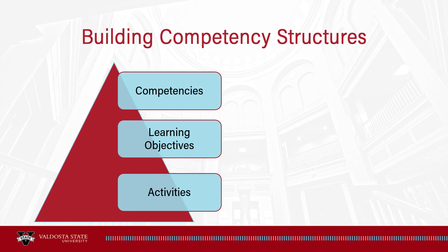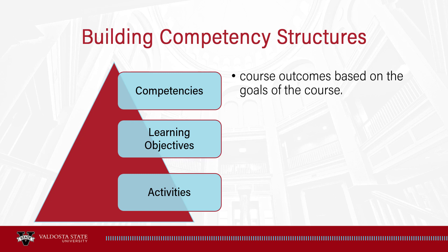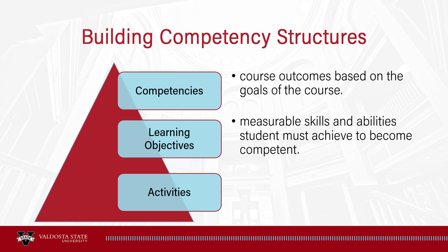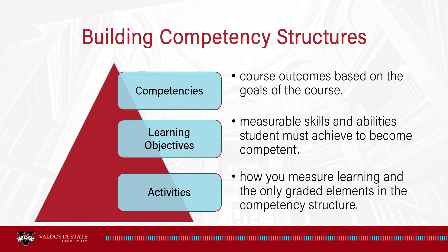Competency structures form a sort of triangle with building blocks, with the course goals at the pinnacle. At the top are the competencies, which represent goals or aims of the course. Learning objectives are the middle building block — these have measurable criteria to determine if the objective has been met by the student. Activities are the foundation of learning; these are the tools you use to assess student learning throughout your course.